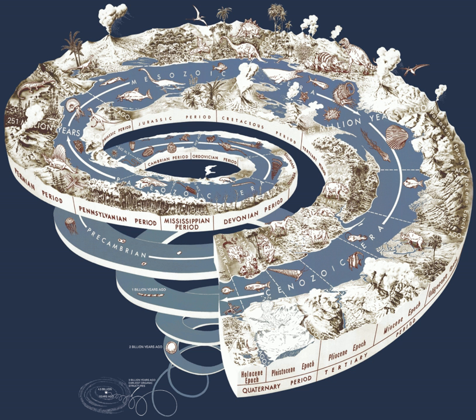Geochronology is the science of determining the age of rocks, fossils, and sediments using signatures inherent in the rocks themselves. Absolute geochronology can be accomplished through radioactive isotopes, whereas relative geochronology is provided by tools such as paleomagnetism and stable isotope ratios. By combining multiple geochronological indicators, the precision of the recovered age can be improved.